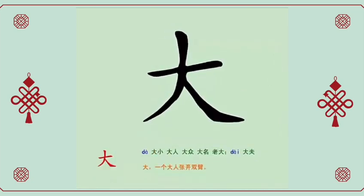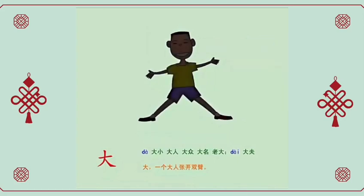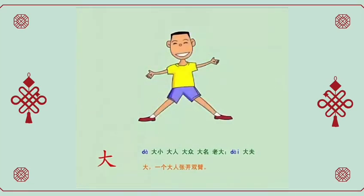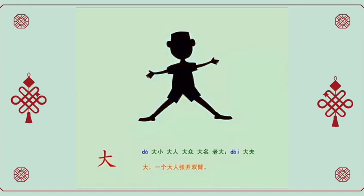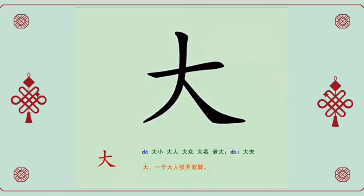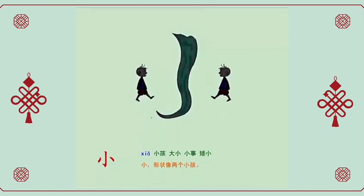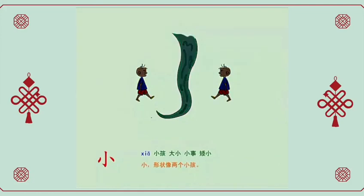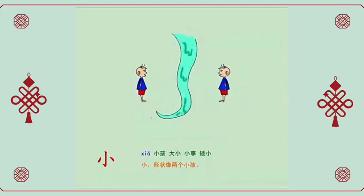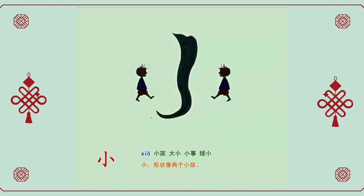大, big. The writing looks like a man with open arms. 大小, size. 大人, adult. 小, small. The character is shaped like two small children. 小孩, child. 小事, small matter. 矮小, short and small.